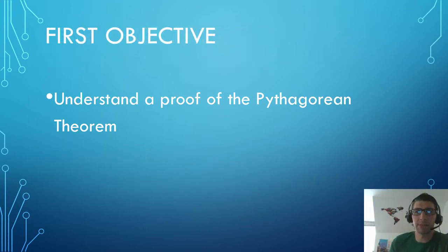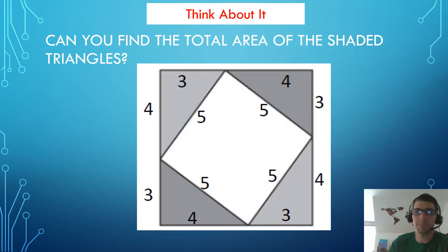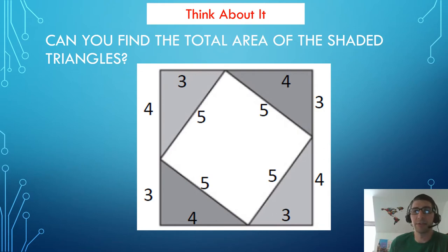Our first objective is to understand a proof of the Pythagorean theorem. To accomplish this objective, we will work with a lot of right triangles and squares before we get to what the Pythagorean theorem actually states. Here is a picture of some right triangles. All of the angles that appear to be right angles are right angles — that is, they measure 90 degrees.